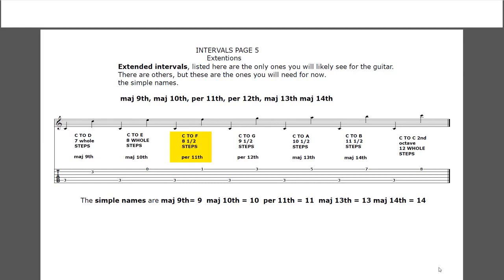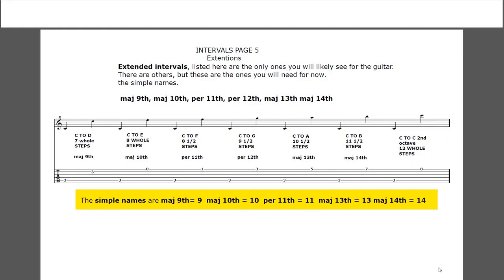C to F, eight and a half steps, is a perfect eleventh - sometimes called quartal harmony. C to G, nine and a half steps, is a perfect twelfth - quintental harmony. C to A, ten and a half steps, is a major thirteenth, and thirteenth chords occur in jazz all the time. C to B, eleven and a half steps, is a major fourteenth, and they do exist. C to C the second octave is twelve whole steps. You can have interval distances all the way up to twenty-four notes apart.